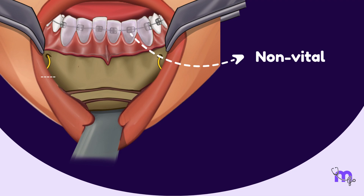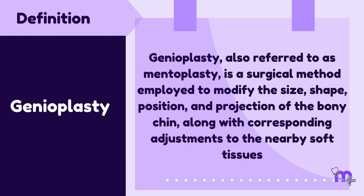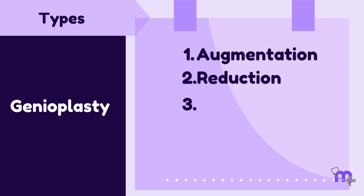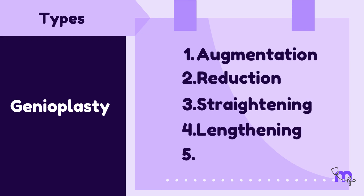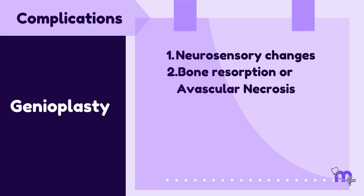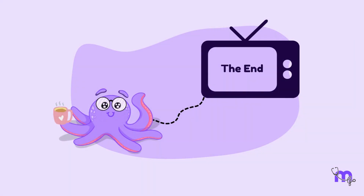In summary, genioplasty is defined as the surgical modification of the chin. The types include augmentation, reduction, straightening, lengthening, and alloplastic genioplasty. Complications include neurosensory changes, bone resorption or avascular necrosis, hemorrhage, airway obstruction, non-vital teeth, and witch-chin deformity. We hope this video simplified the topic of orthognathic surgery for you.